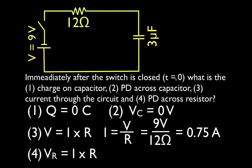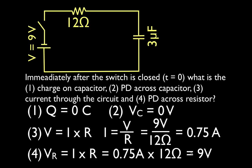Where is all the voltage in the circuit? It's on the resistor. The voltage equals the current times the resistance, so the voltage equals 0.75 times 12, which gives us nine volts — that matches the battery. All of the voltage is on the resistor; none of it is on the capacitor yet.